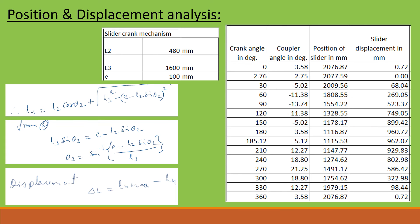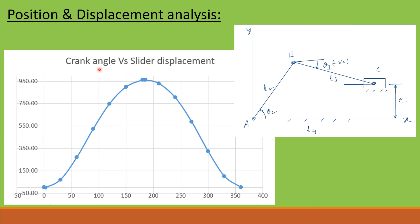In this graph, the crank angle is plotted on the horizontal axis and displacement on the vertical axis. The second point corresponds to the zero-displacement reference position, which is L4 max — when the slider is farthest from the crank axis. The other marked point corresponds to the maximum displacement, when the slider is nearest to the crank axis.